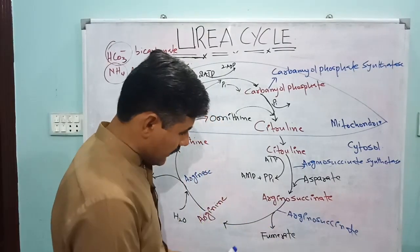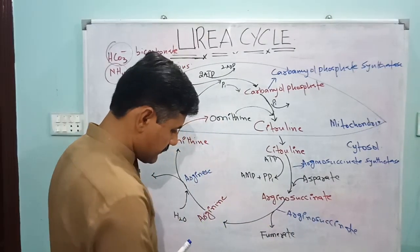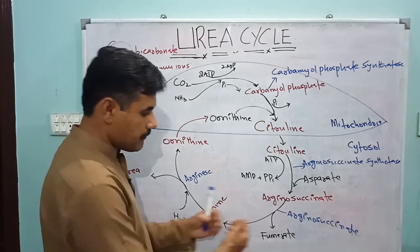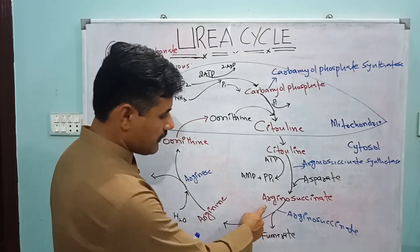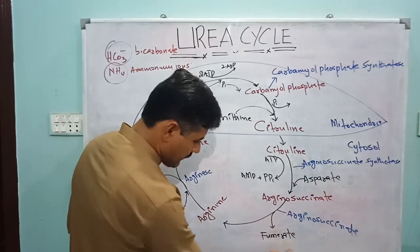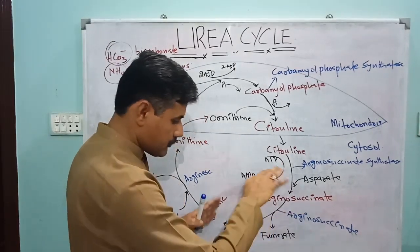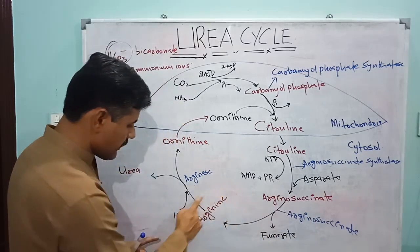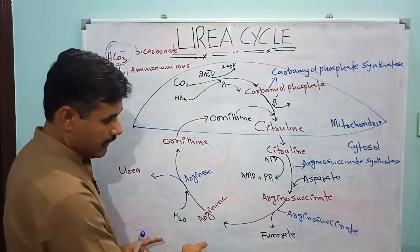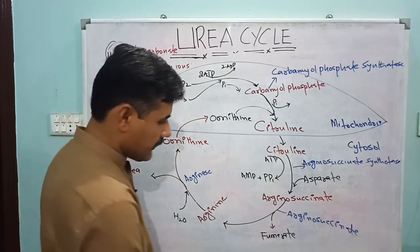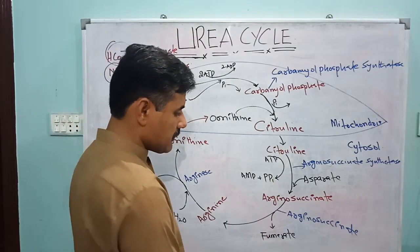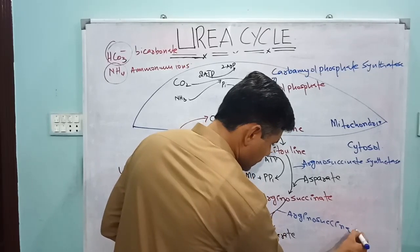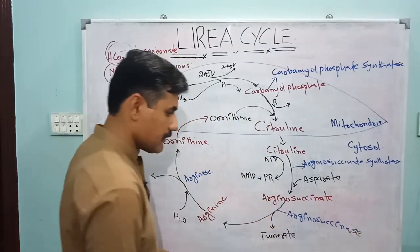Argininosuccinate further converts into arginine by a process in which fumarate is removed. With the removal of fumarate, argininosuccinate is converted into arginine. This step is catalyzed by the enzyme argininosuccinase.